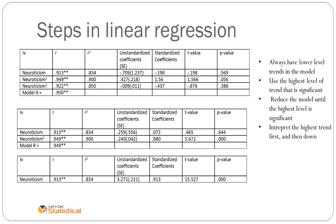We reduce the model until the highest level is significant, and always interpret the highest level first. So if we're sticking with neuroticism squared, and the linear trend was still also significant, we'd interpret the highest level, that is neuroticism squared, over and above the linear trend.